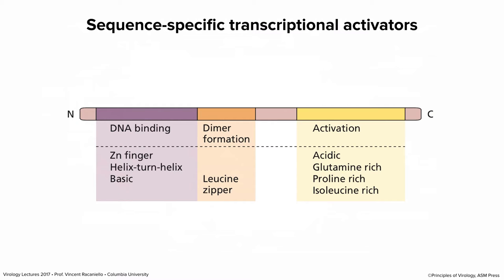Sequence-specific DNA binding proteins have a modular structure: a DNA binding domain at the N-terminus that interacts with DNA, a dimerization sequence — typically a leucine zipper — in the middle since these proteins are often dimers, and an activation domain that interacts with either the polymerase directly or another protein that in turn acts with the polymerase. These can be cellular or viral proteins.